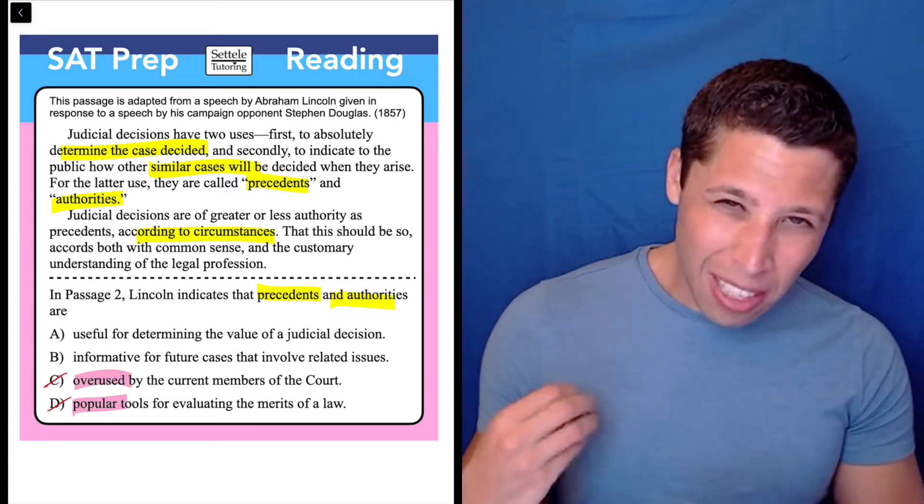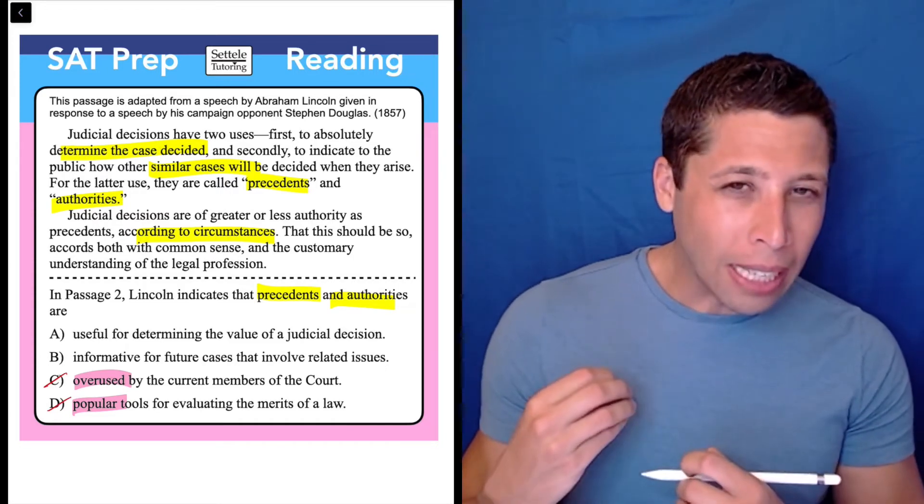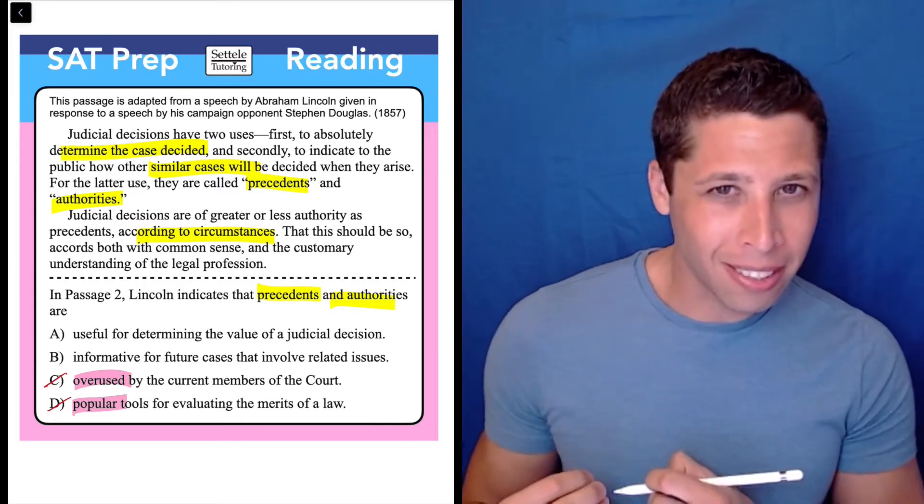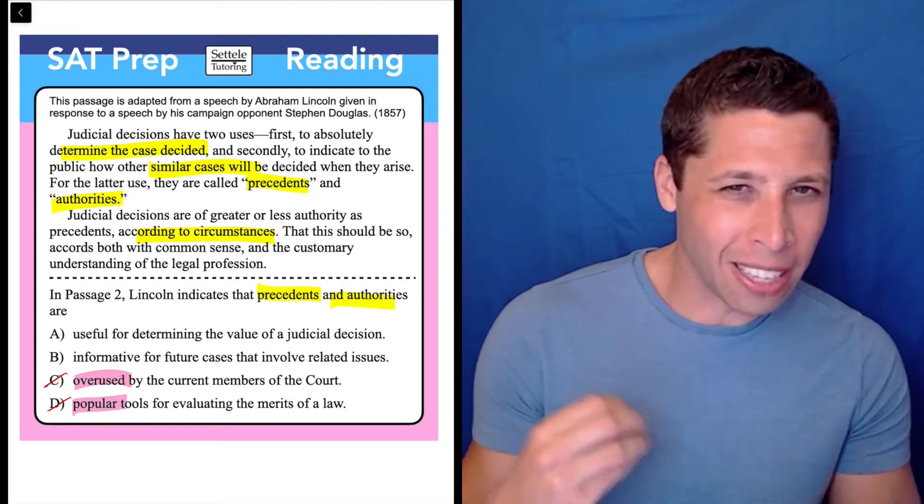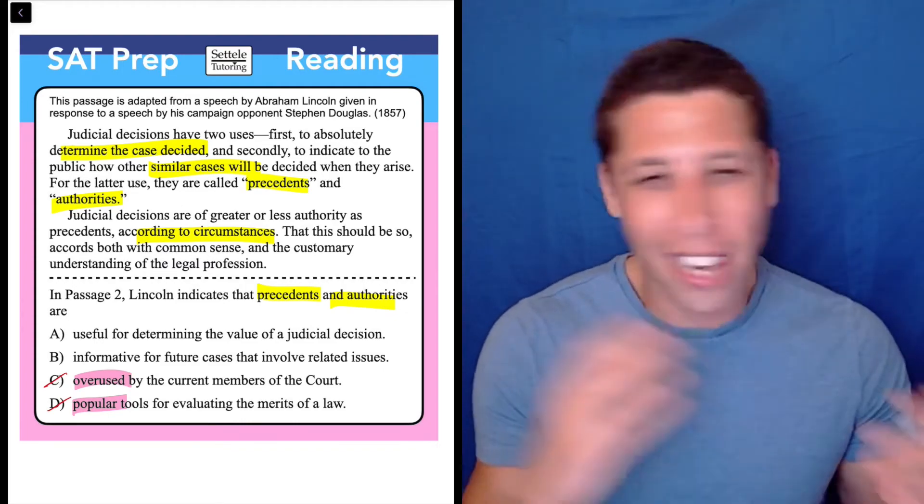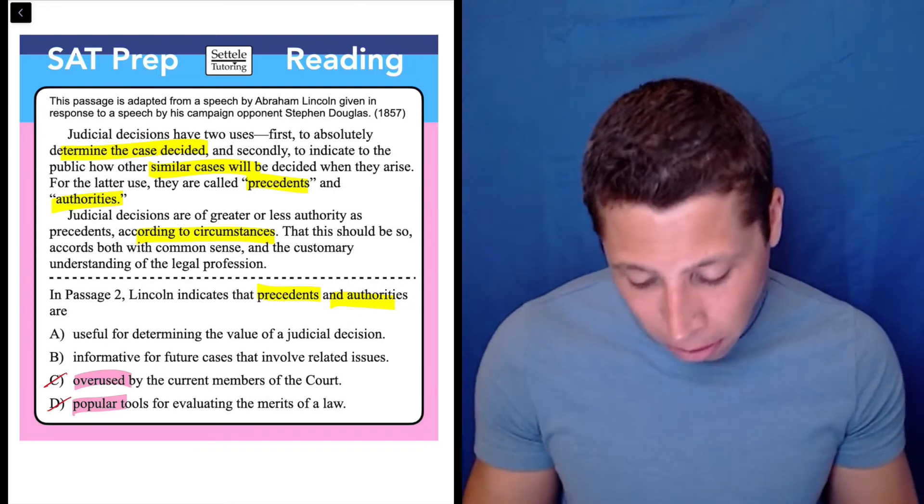Well, it seems like maybe that's backwards, like it's actually the decision that sets the precedents and the authority, not that the authorities and precedents set the decision. I don't really know. Again, I'm very confused by this, but let's take a look at B.